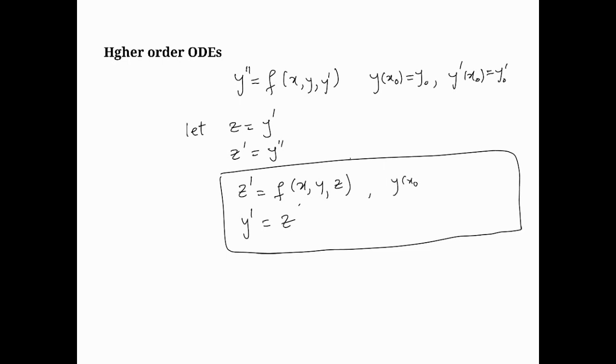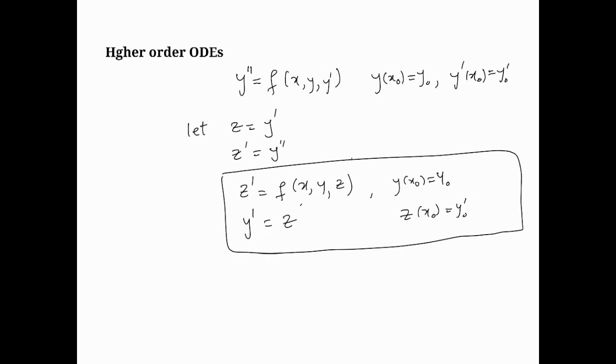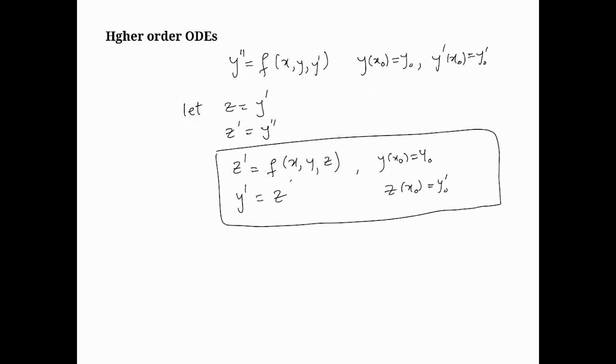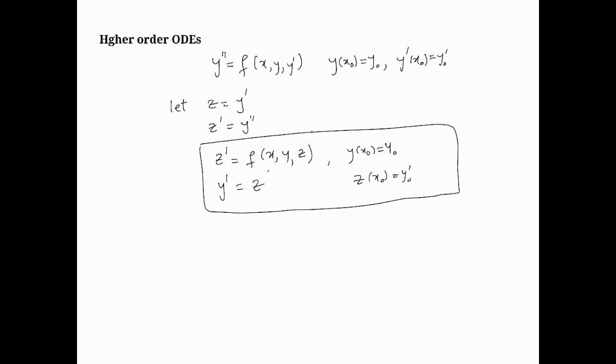This system has the initial conditions y(x0) equals y0 and z(x0) equals y0 prime. This is how we can take a second order differential equation and convert it to two first order equations. This can be extended to nth order differential equations.